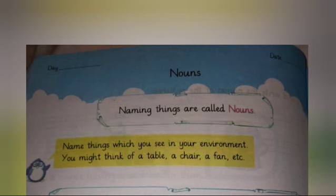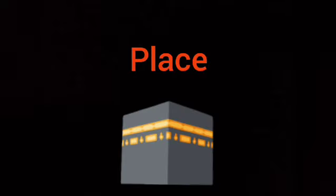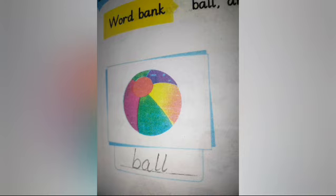You know, noun is called a naming thing. The name of any place, name of anything is called noun. Students, now look at this picture — here you can see a ball. The name of a ball is called noun.